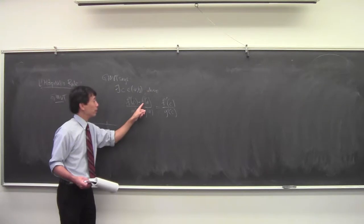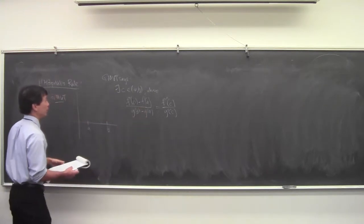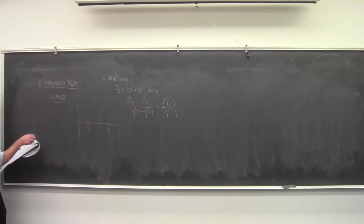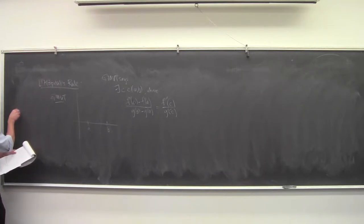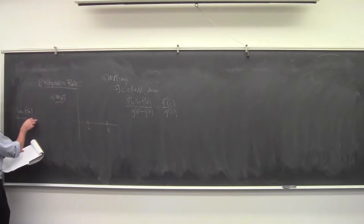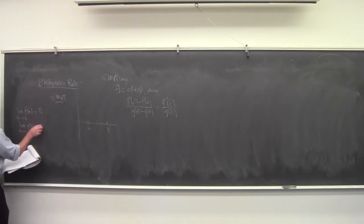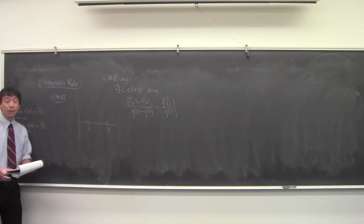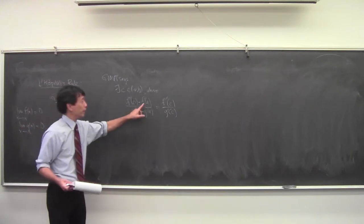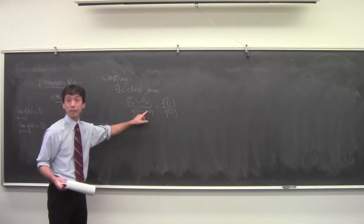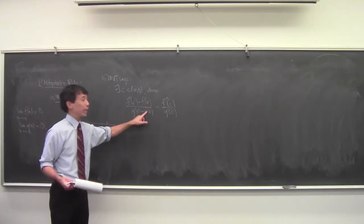L'Hôpital's rule, at least the version we're doing, requires that the limit of F(x) as x approaches A equals zero, and the limit of G(x) as x approaches A equals zero. That's what's going to simplify things for us.